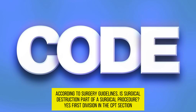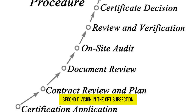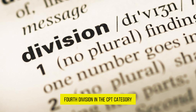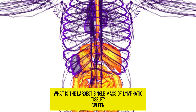First division in the CPT section. Second division in the subsection. Third division in the subheading. Fourth division in the category.